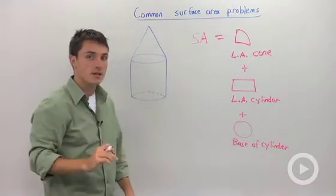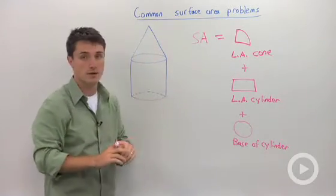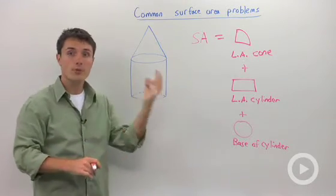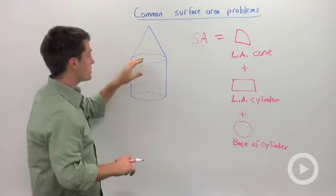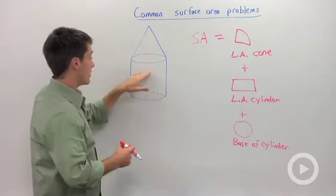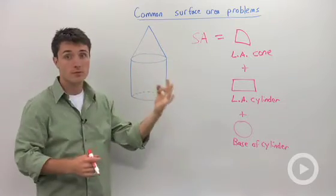The common mistake when you're trying to find the surface area is either adding in two circles, because you see two circles, or even three circles, where you say the surface area of the cone includes one circle. The surface area of the cylinder involves two circles for a total of three.